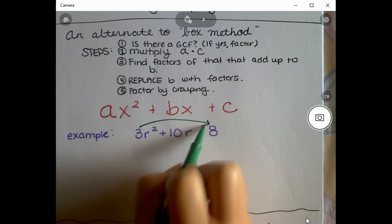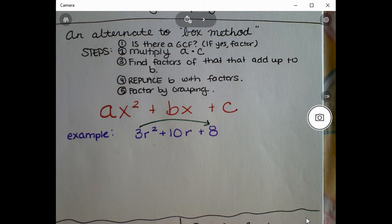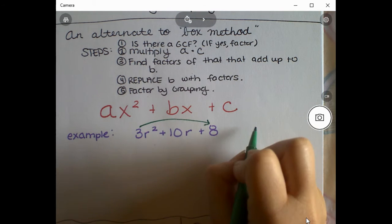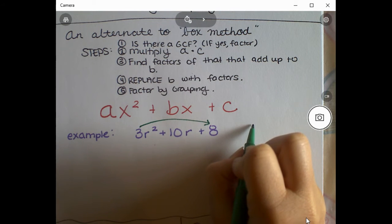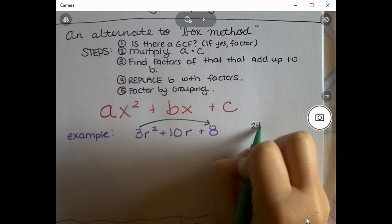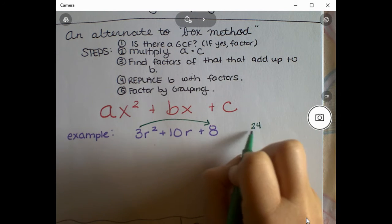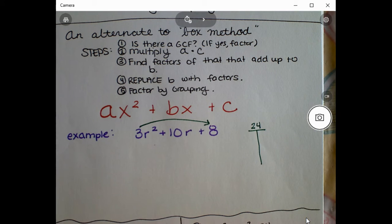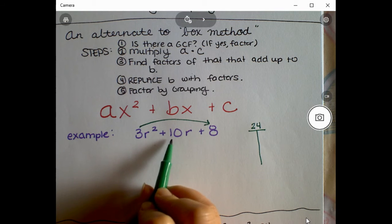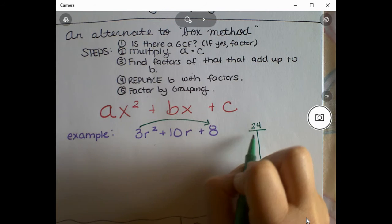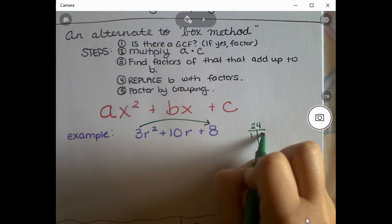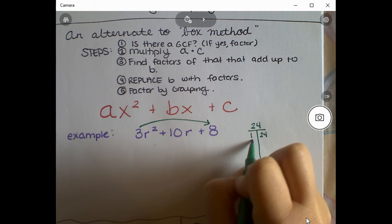The next step is to multiply a times c — the first term times the last term. This is similar to the box method. Three times eight is 24. We're going to use a T-chart to find the factors of 24 that add up to 10.